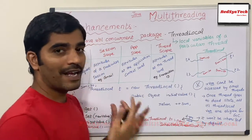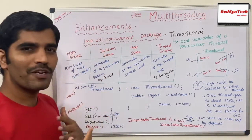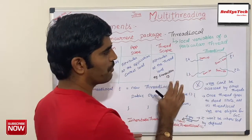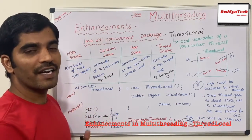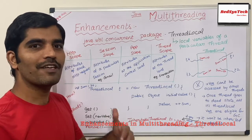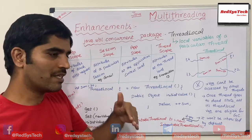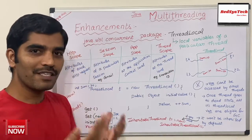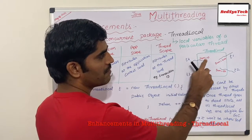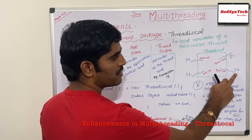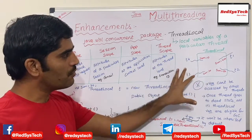As I said, ThreadLocal is a class in Java defined by Oracle. Let's say you have multiple threads — t1, t2, t3, t4 — and there is a common variable, say 'sum'. If you declare a variable at the class level it is an instance variable; if at the method level it is a local variable. Similarly, for every thread, if you want to define a variable or scope, it is called ThreadLocal. So for t1, sum could equal 200; for t2, sum equals 50. They won't conflict — every thread has its own value. This is how ThreadLocal works.